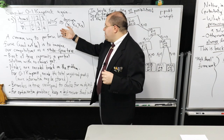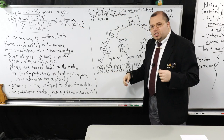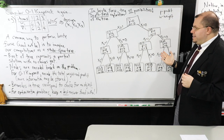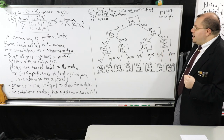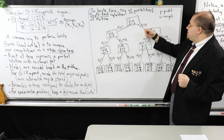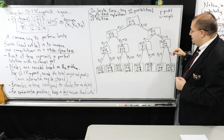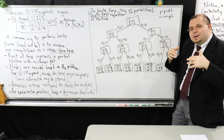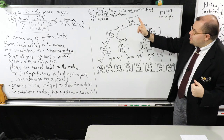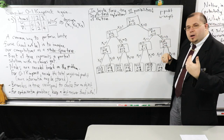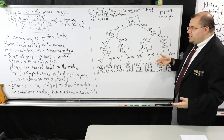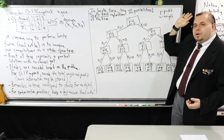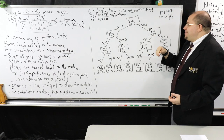Choices correspond to branches in the state space tree. Here's an example of one complete state space tree where I consider all possibilities. I use p and w as abbreviations for profit and weight. At the root I haven't made any choices. My goal is to assign x1, x2, and x3 corresponding to items 1, 2, and 3.